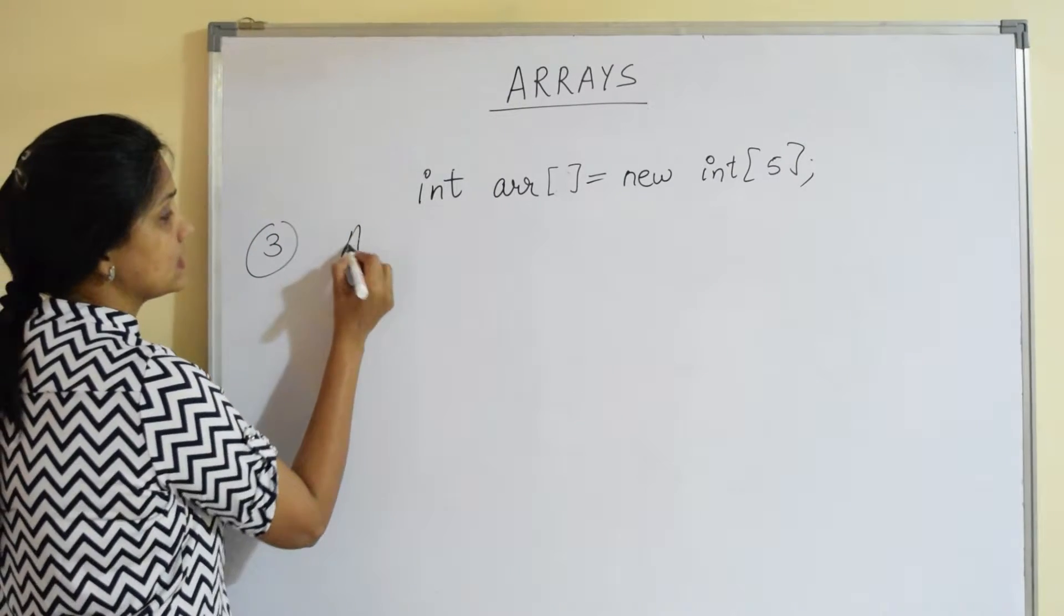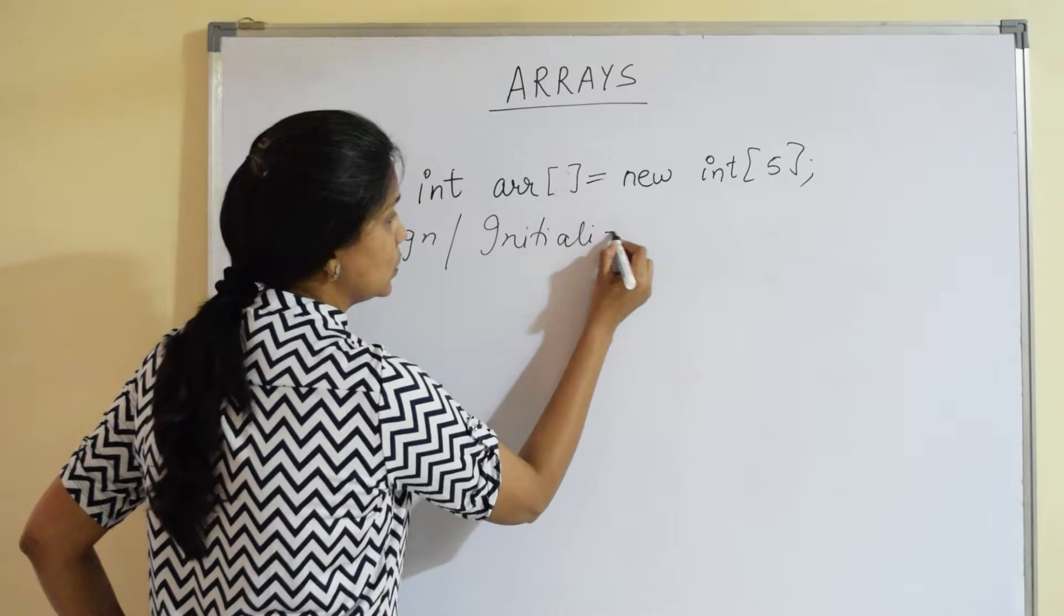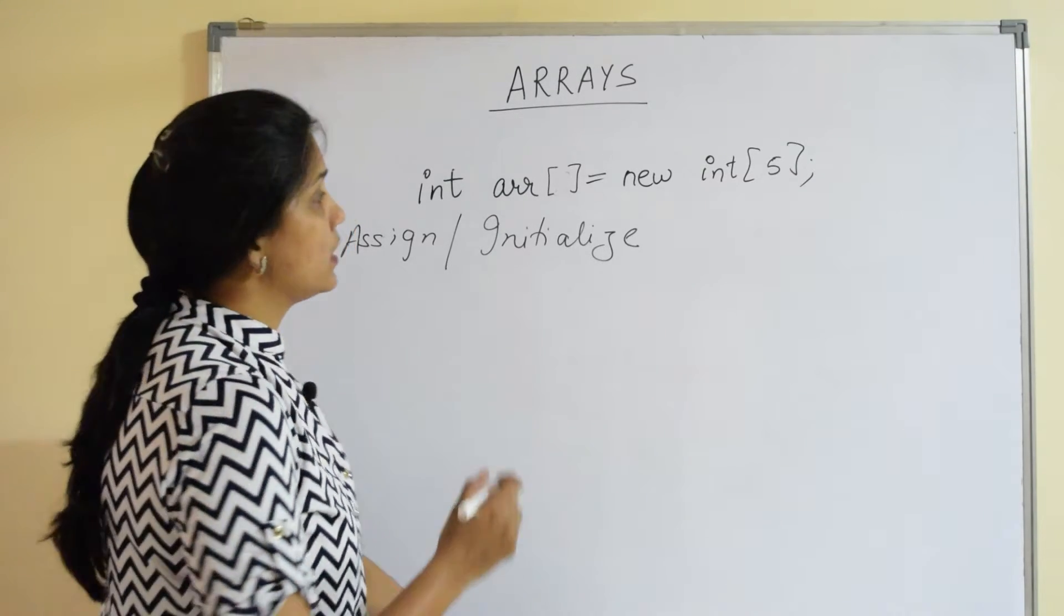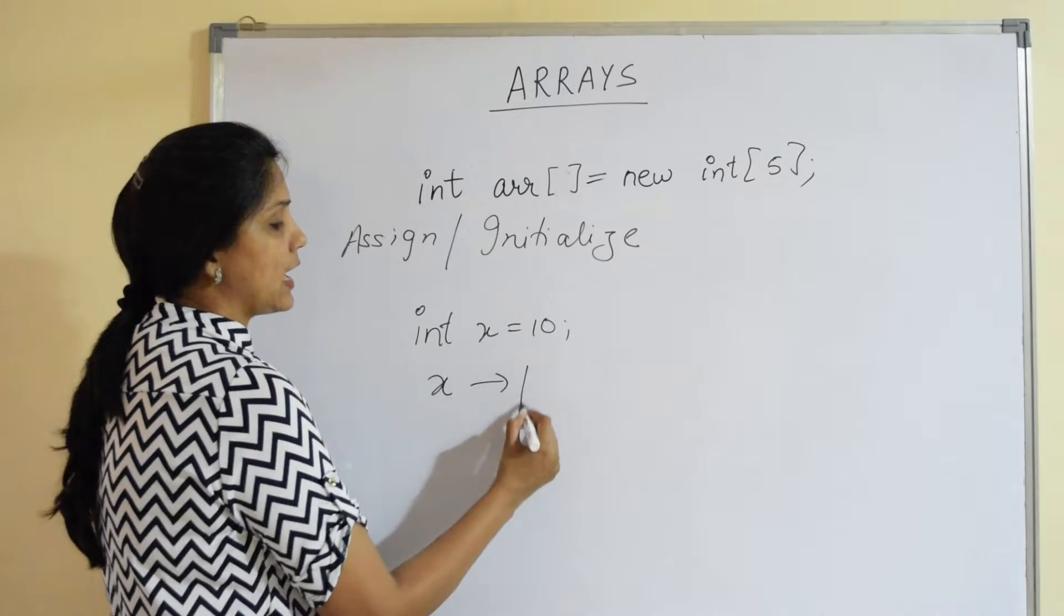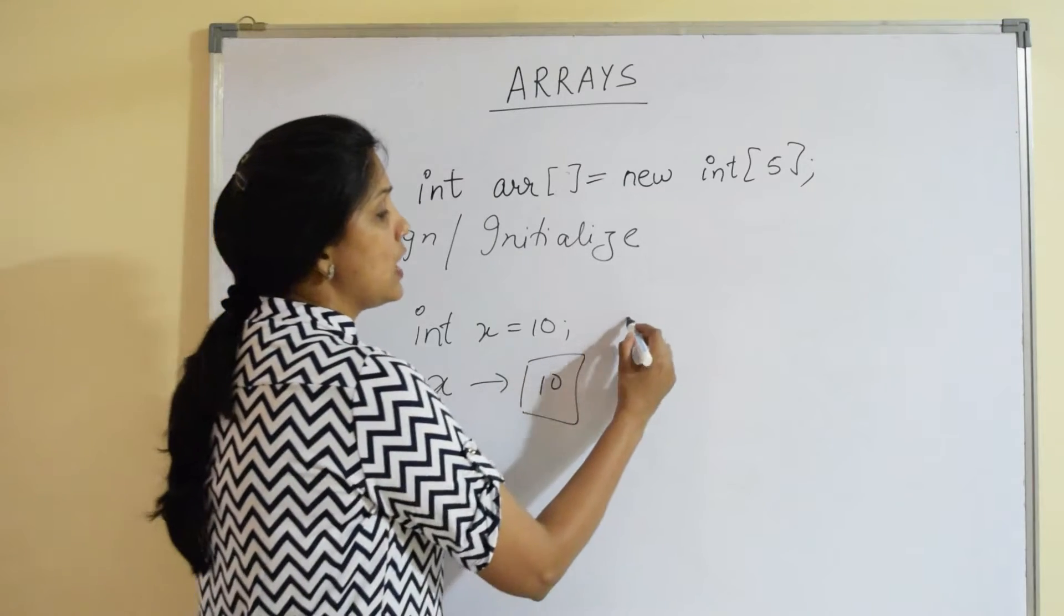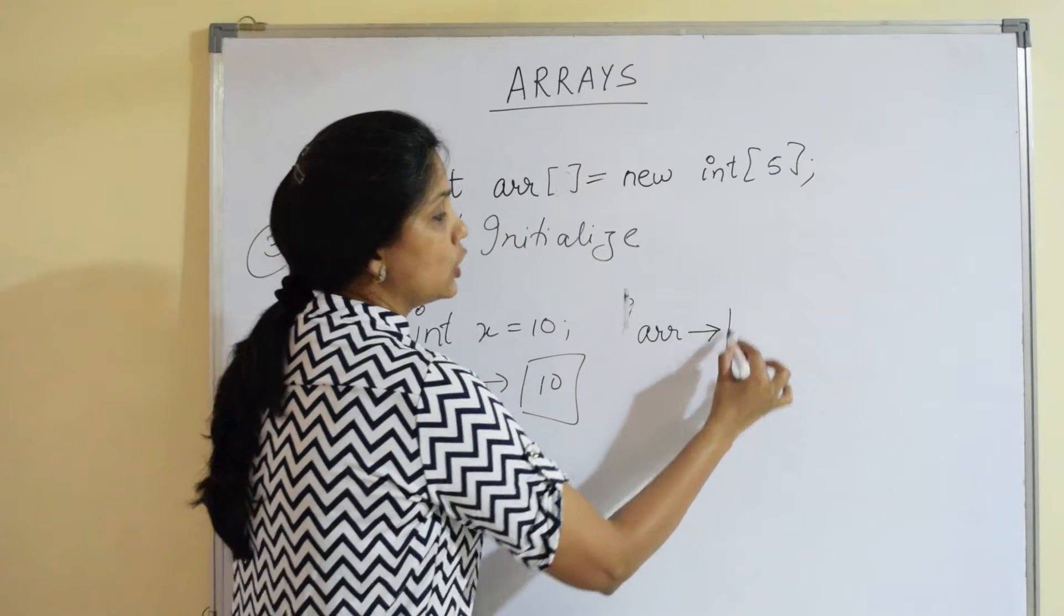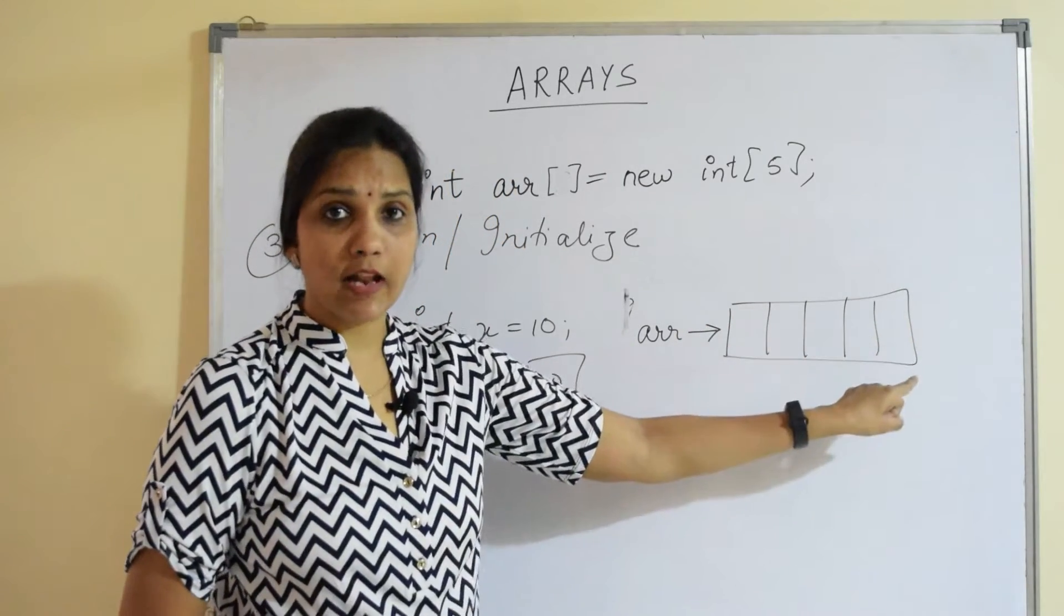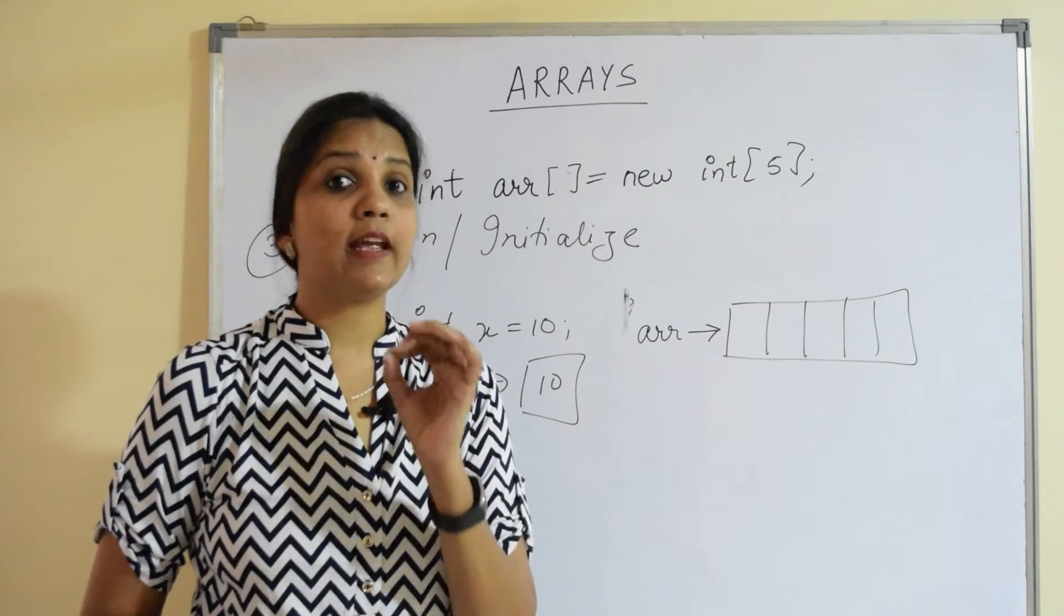Now the third step is assignment or initialization. I want to initialize the values in the array. Now, how do we initialize? Let's understand how arrays work. If we have a normal variable x and I say 10, I have an x variable that has a memory location where the value 10 is stored. No issues because it's just a normal variable. As opposed to that, we have this variable arr which is pointing to a memory location capable of storing five values. Remember indexing.